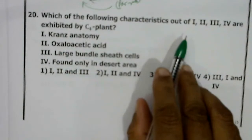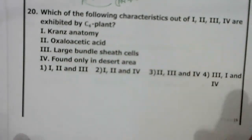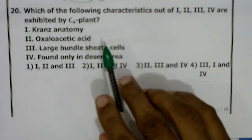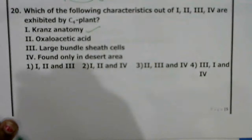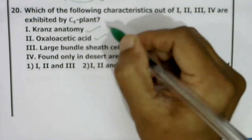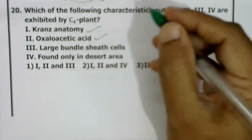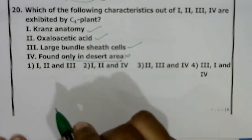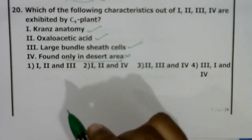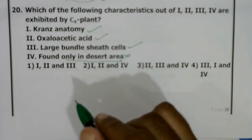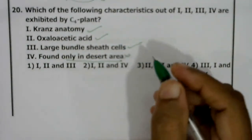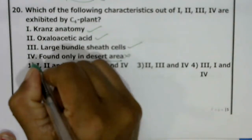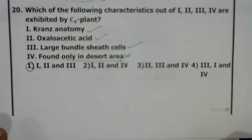Which characteristics are exhibited by C4 plants? Four statements given: (1) Kranz anatomy — correct; (2) oxaloacetic acid as first stable product — correct; (3) large bundle sheath cells — correct; (4) found only in desert areas — incorrect. C4 plants are commonly found in tropical areas, not only deserts. So statements 1, 2, and 3 are correct. Correct answer: first option.